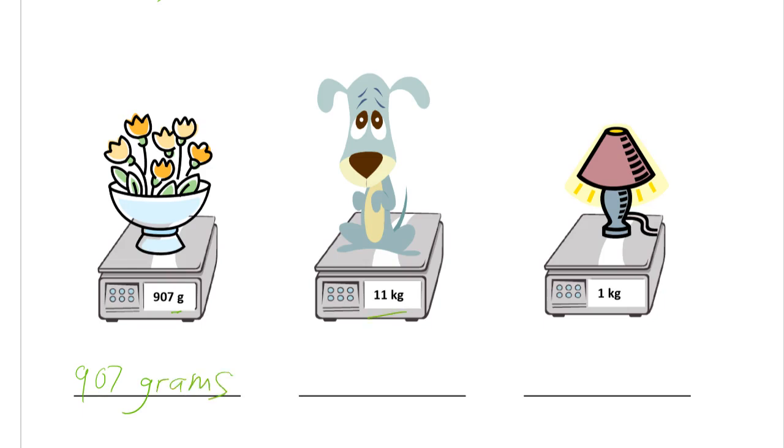These are kilograms. So it's 11 kilograms. And that's one kilogram lamp. Oops. That's the abbreviation. We're not writing abbreviations. We're writing the whole word. One kilogram. One kilogram. It's only one kilogram, right?